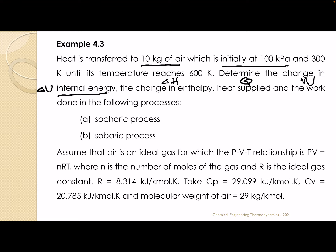We're looking at this under different conditions: isochoric process and isobaric process. We've been given the fact that this particular air is behaving as an ideal gas. Air is not real in this case — we've been told it behaves as an ideal gas, so all the assumptions herein follow. PV equals NRT, where N is the number of moles of the gas and R is the ideal gas constant.